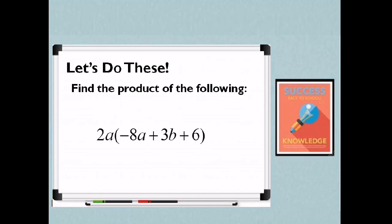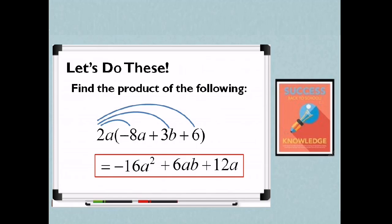How about the second example? 2A times the quantity negative 8A plus 3B plus 6. We are going to multiply monomial by trinomial. So 2A times negative 8A. So 2 times negative 8 is negative 16. A times A, we just add the exponent that is A squared. Therefore, negative 16A squared. Next, 2A times 3B. 2 times 3 is 6, A times B is AB. Therefore, plus 6AB. Last term, 2A times 6. So you have 2 times 6 is 12A. So the product is negative 16A squared plus 6AB plus 12A.